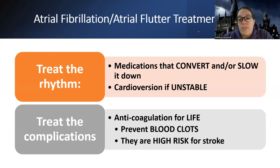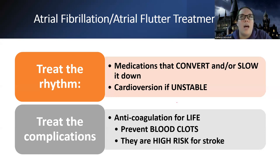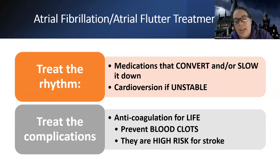The other thing that's different about this rhythm is that we also have to treat the complications. Most dysrhythmias — I'm just treating the rhythm — but with atrial fibrillation, we have this really high chance of blood clots. This is why people with atrial fibrillation end up on anticoagulation for life. As the nurse, I need to teach them bleeding precautions and be looking for signs of stroke, heart attack, or pulmonary embolism, as clots can travel easily from the heart.